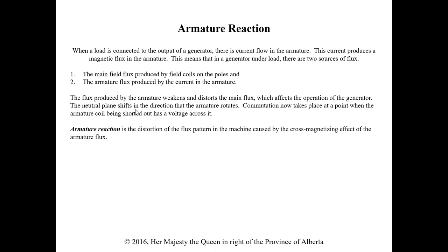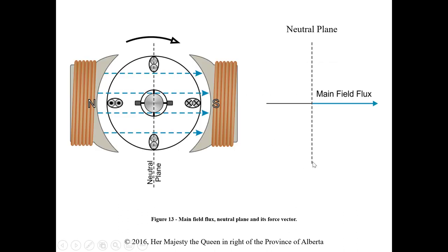The armature flux distorts the main flux or field flux, which affects the operation of the generator. The neutral plane shifts in the direction that the armature rotates. Commutation now takes place at a point where the armature coil being shorted has voltage across it. The whole point of locating the brushes at the neutral plane was to avoid arcing — but with armature reaction, the neutral plane shifts, and now contact is being made outside the zero-volt point, causing arcing, sparking, and heat. Armature reaction is the distortion of the flux pattern caused by the cross-magnetizing effect of the armature flux.